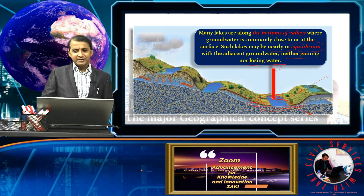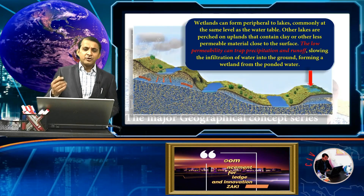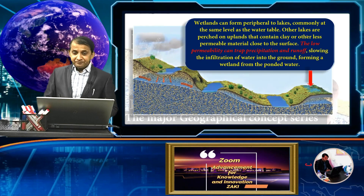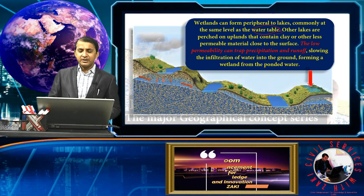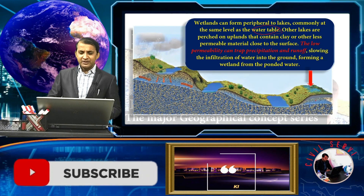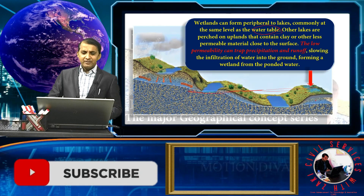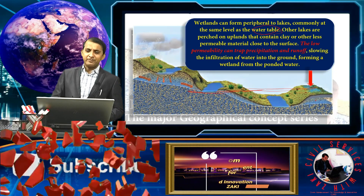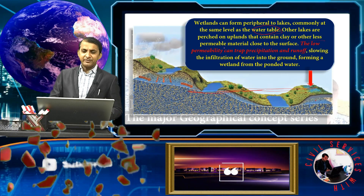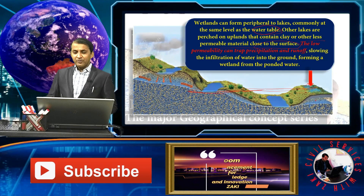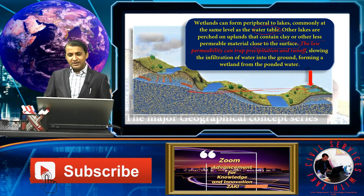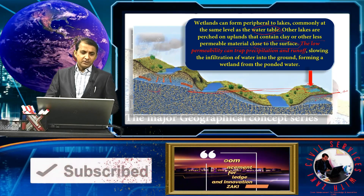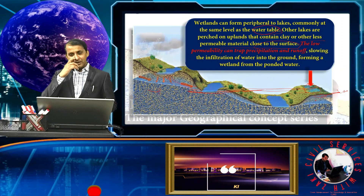Beyond valley-bottom lakes, peripheral wetlands can also form at the same level as the water table. Other lakes placed on uplands contain clay and less permeable material close to the surface. These low-permeability lakes allow less water to trickle down compared to more permeable settings.